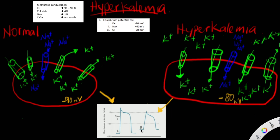The second effect is a decrease in the amplitude of the action potential. The amplitude is measured from the resting membrane potential to the spike value. It is shorter under hyperkalemic conditions than under normal conditions. With hyperkalemia, the resting membrane potential is less negative — shifted from around negative 90 — so the amplitude would also decrease.